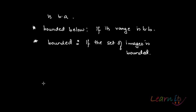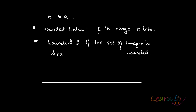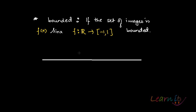Let us take an example. Consider the function f(x) = sin(x). Sine x is defined for all real values, and its range is [-1, 1] — it moves between minus 1 and 1.